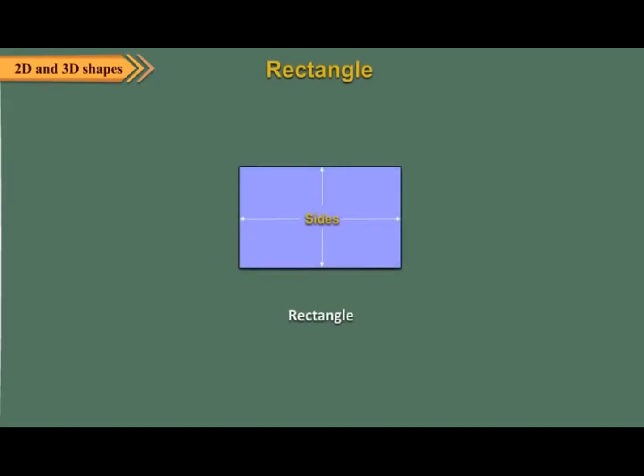Rectangle. A rectangle has four sides. The opposite sides of the rectangle are equal. It has four vertices.